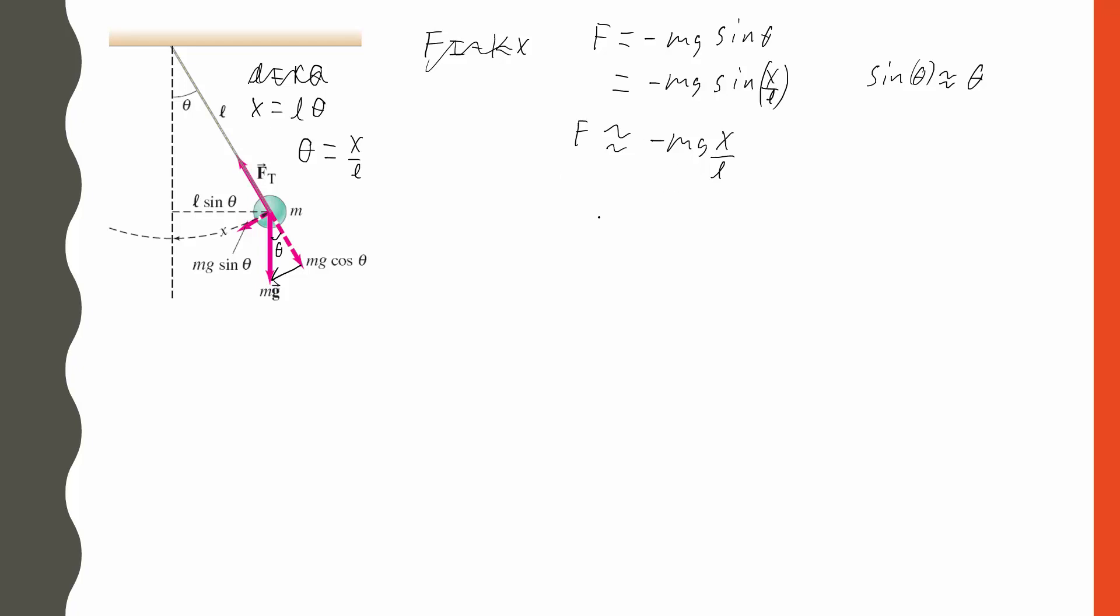If we wanted to find our frequency relations, we can play the same game that we did with the box on a spring. We can say that ma is equal to negative mgx over L. Then we can get rid of the m's, and then we can write the acceleration as the second derivative of the position with respect to time. If we move this to the other side, we get d²x/dt² + (g/L)x = 0. This is identical to the equation we got before, except for this part right here. Before, we had k over m, and now we've got g over L.